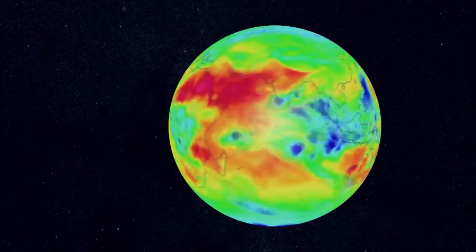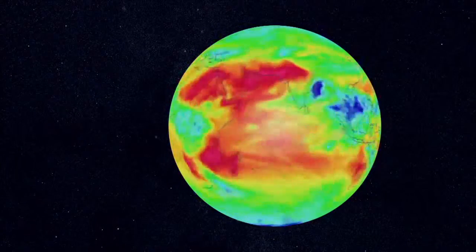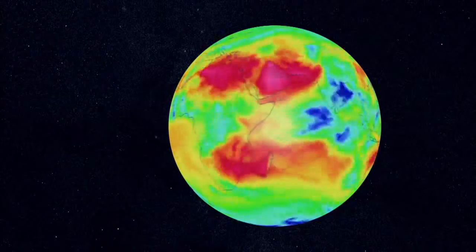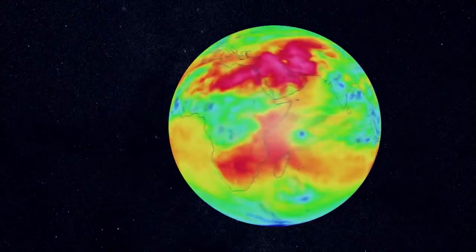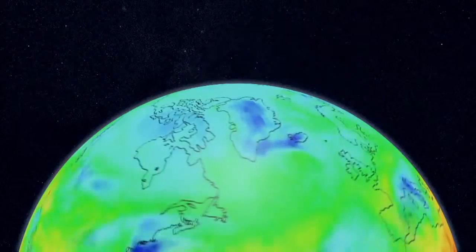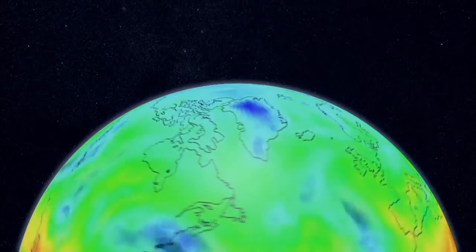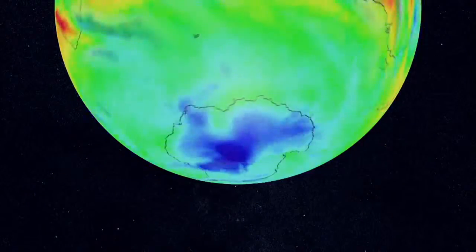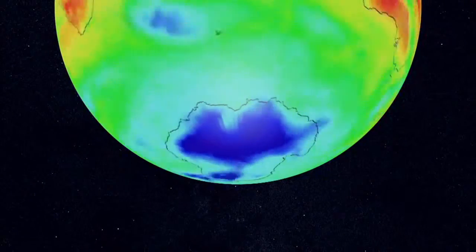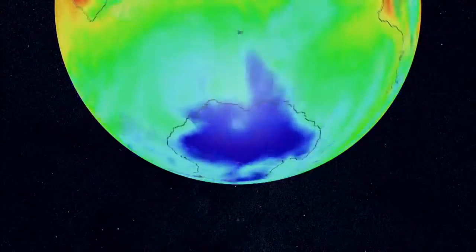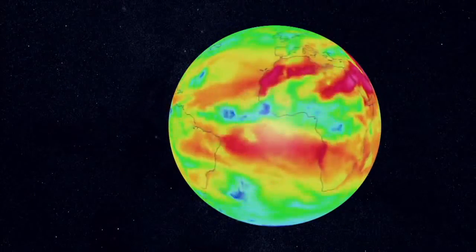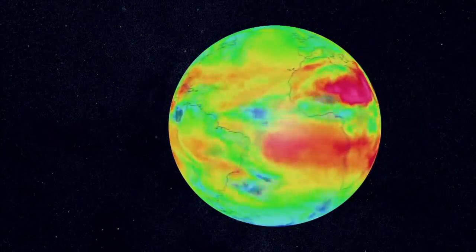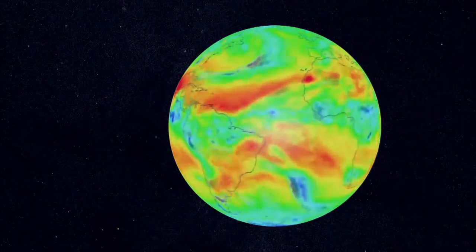One of the most important details about the sun's heating of Earth's surface is that it's uneven. Just as the sun's intensity varies from one time of day to another, it also varies from one region to another, with the equator absorbing far more energy than areas near the poles.